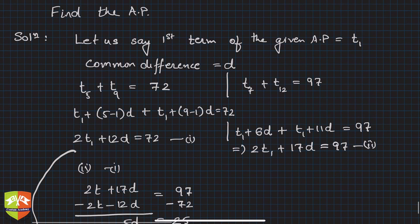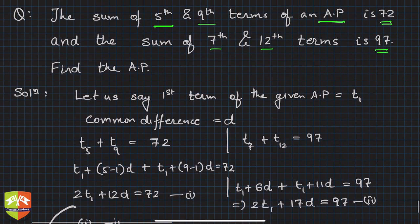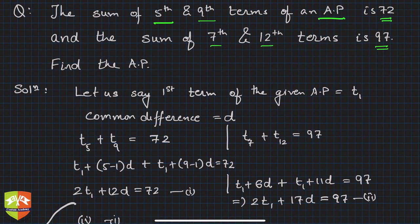So what is the learning? If such questions are there, clearly this is a question of linear equations in two variables. You get two relations using the nth term formula of the AP, solve the two linear equations to get t1 and d. So many questions would be where there will be two equations in t1 and d, or first term and the common difference. You solve the equations and find out the two values, and that is how you find the AP.